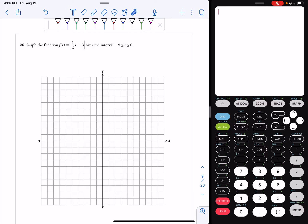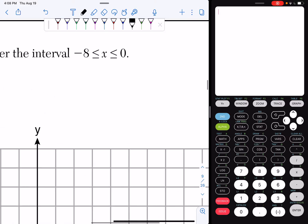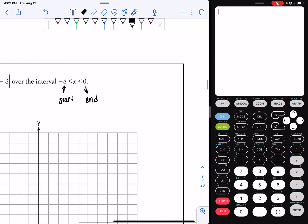So what that means is I only want to graph this function over the x values negative 8 to 0. So I'm going to start at negative 8 and end at 0. What I would recommend is you actually do a table of values for this to make your work nice and organized.